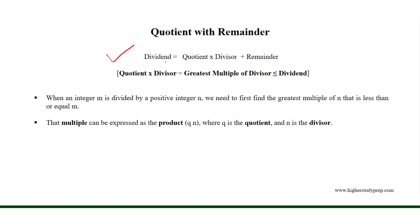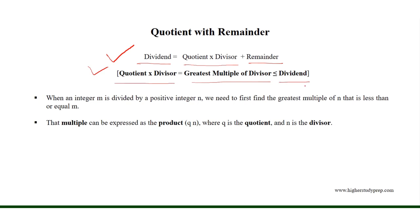Therefore, we can write: dividend is equal to quotient times divisor plus remainder, where quotient times divisor is equal to the greatest multiple of the divisor which is less than or equal to the dividend.